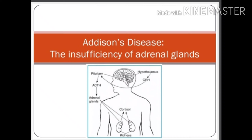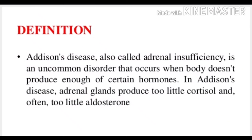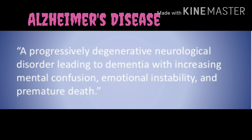Addison's disease is also called adrenal insufficiency. It is not a common disorder. It occurs when the body doesn't produce enough of certain hormones. In Addison's disease, the adrenal gland produces too little cortisol and often too little aldosterone.